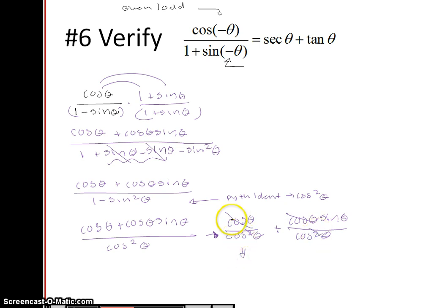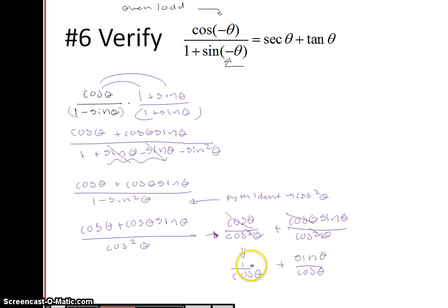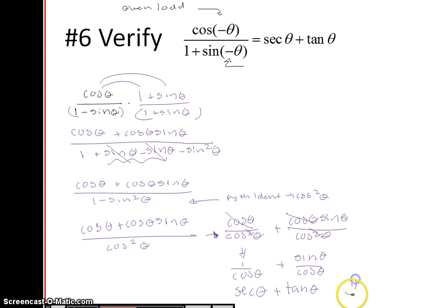Because cosine cancels, I'm left with 1 over cosine of theta. Plus this cosine cancelled with one factor in the denominator, so I have sine over cosine. And 1 over cosine is secant, and sine over cosine is tangent. So I have secant of theta plus tangent of theta, and I am done.